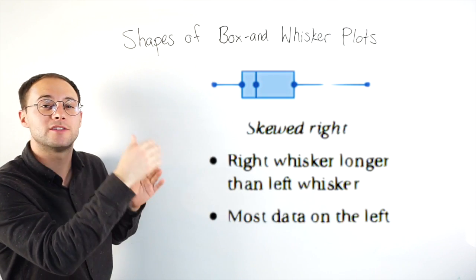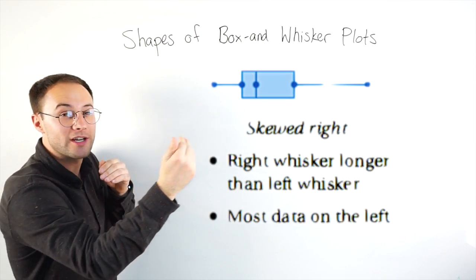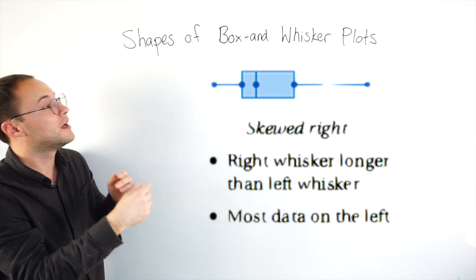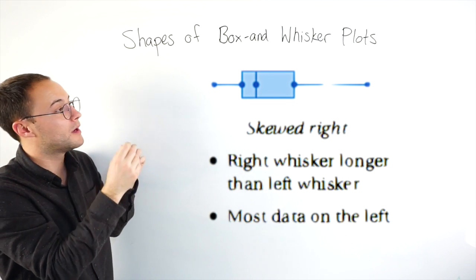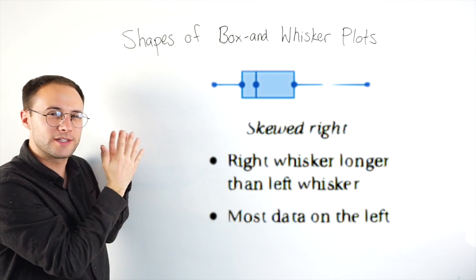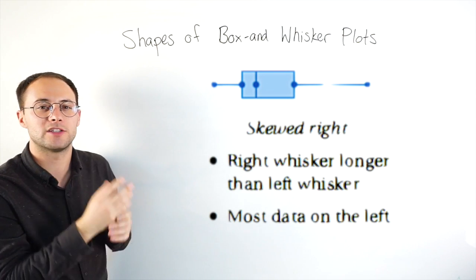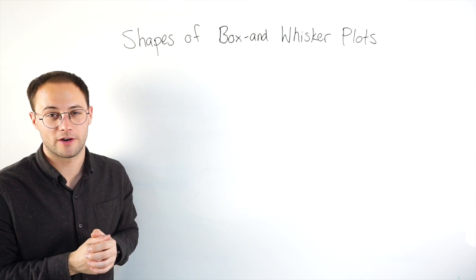And then finally, the last one, skewed right, if that whisker is longer on the right, than the one on the left, and more of the data is towards the left, then we call that skewed right. Here's one to try on your own.